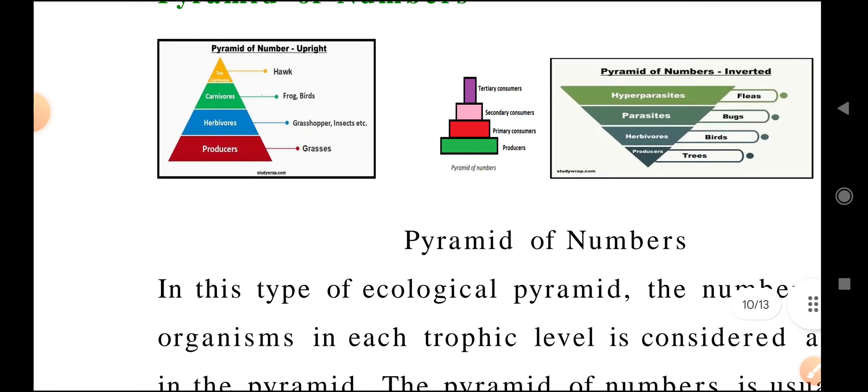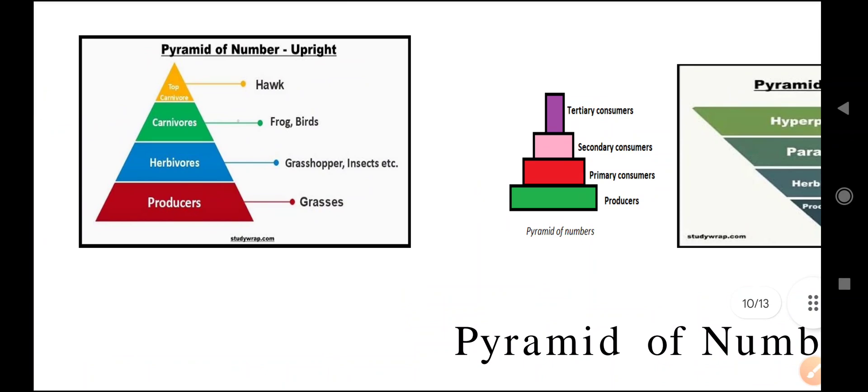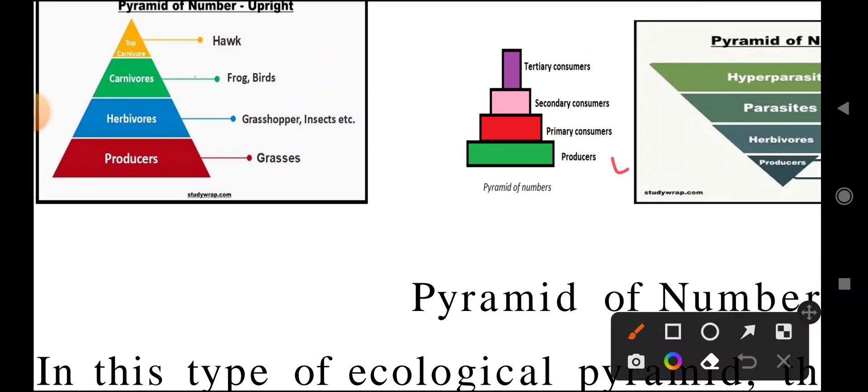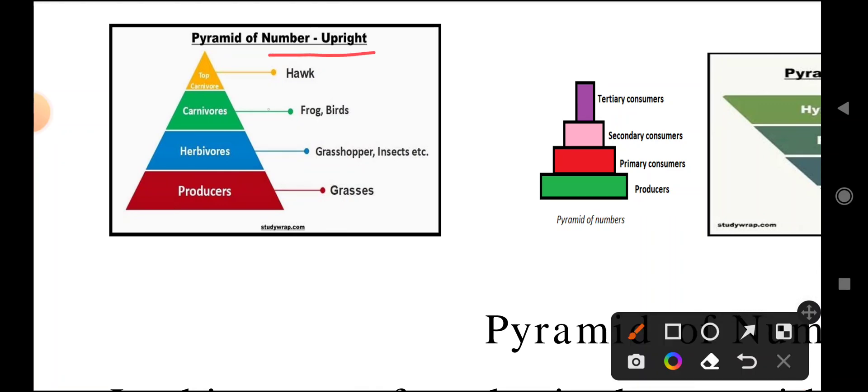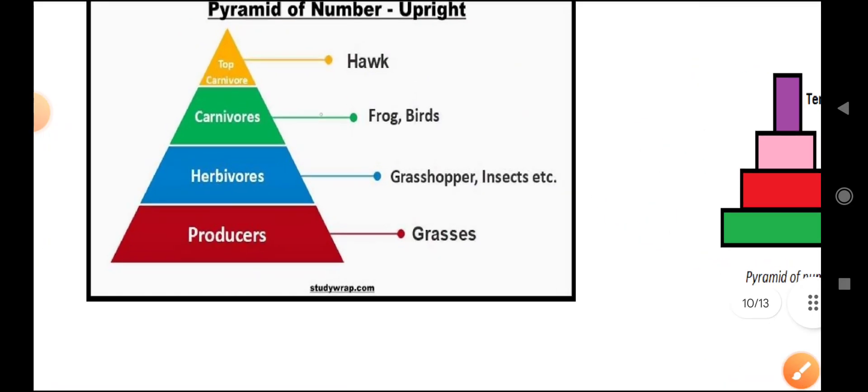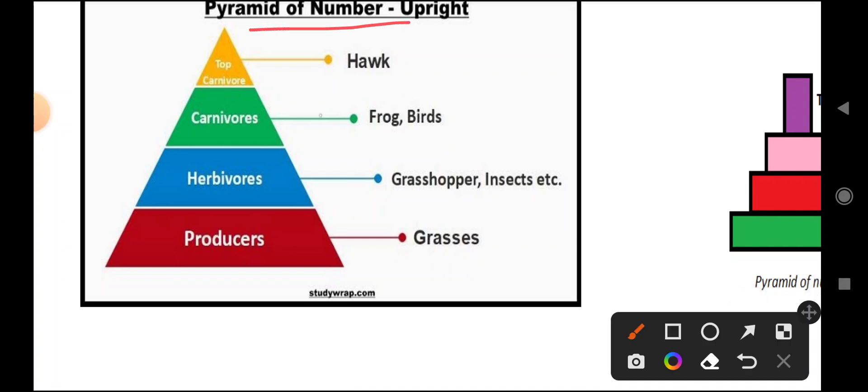There are two types: upright and inverted. In the upright pyramid of numbers, you can see producers at the bottom - grasses. Next are herbivores like grasshoppers and insects, then frogs and birds, and in the next level carnivores, with hawks at the top. This is called pyramid of numbers upright.